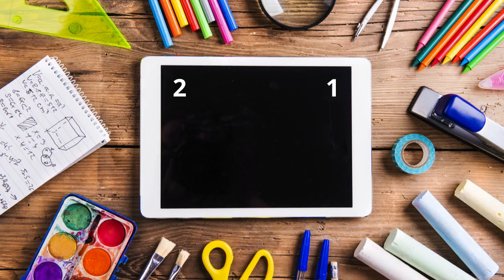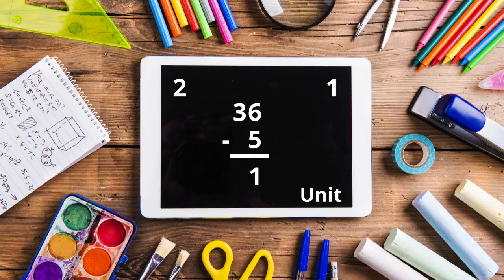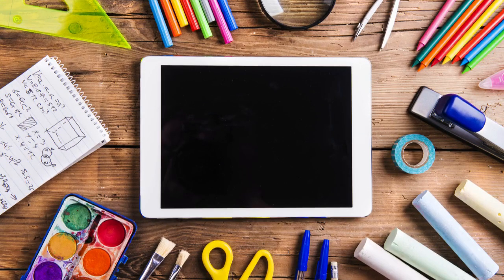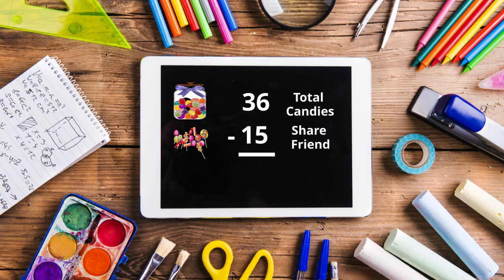In the units column we have 6, and when we cross out 5 of them, 1 remains. So we will write 1 in the units column. In the tens column we have 3, and when we cross out 1, 2 remains. So we will write 2 in the tens column. This makes 21. So after giving 15 candies to your friend from the total of 36, there are 21 candies left in your jar.